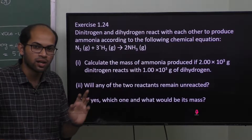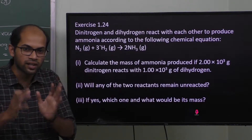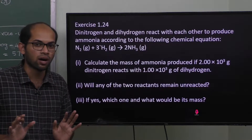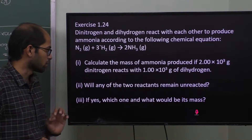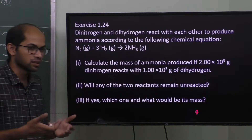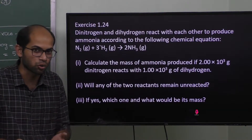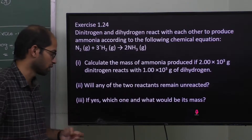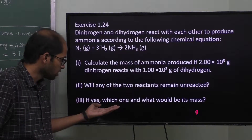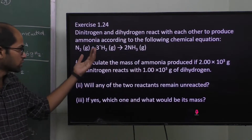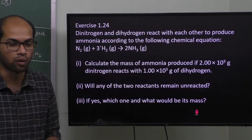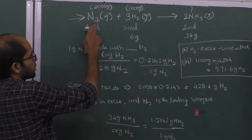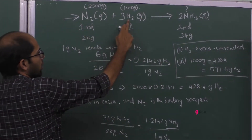First, look at the balanced chemical equation. The reaction involves nitrogen and hydrogen. In the balanced equation, nitrogen is 1 mole and hydrogen is 3 moles.